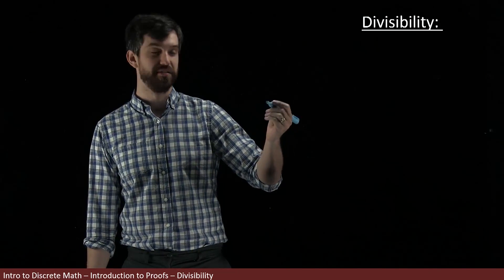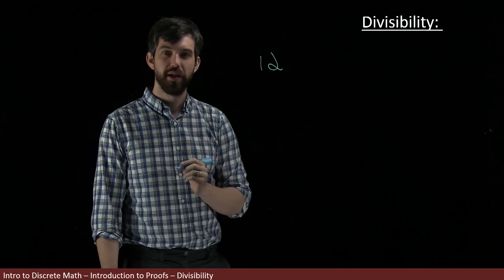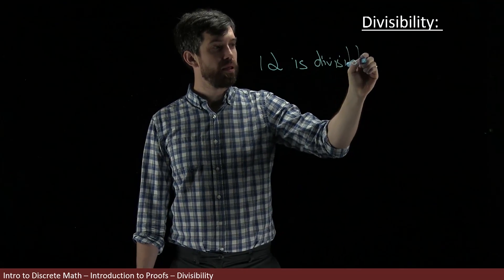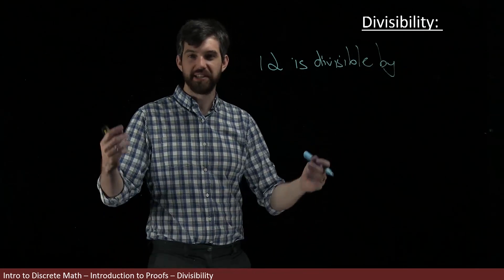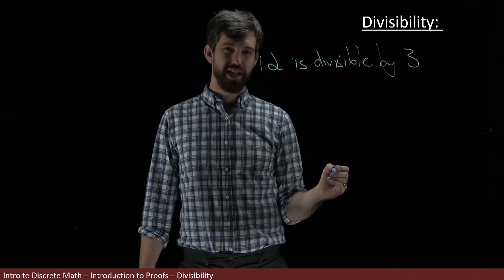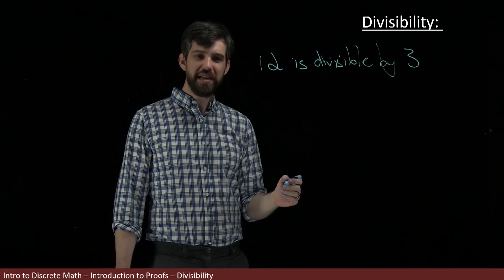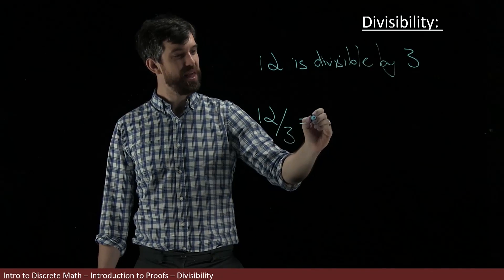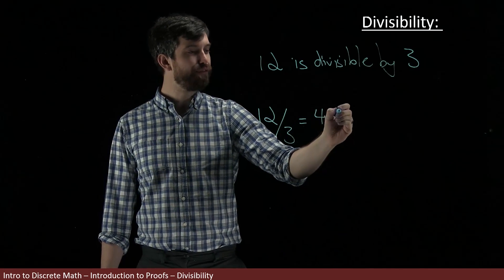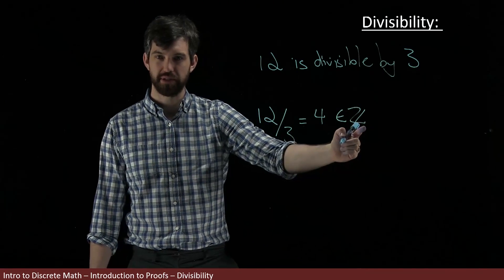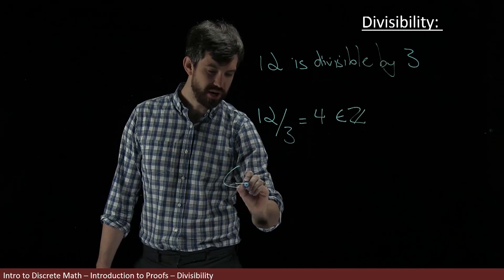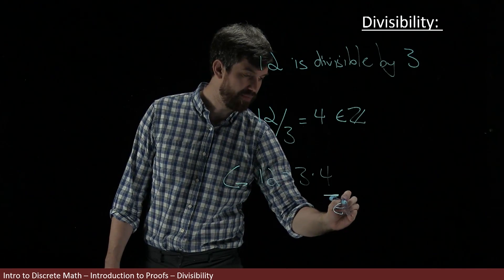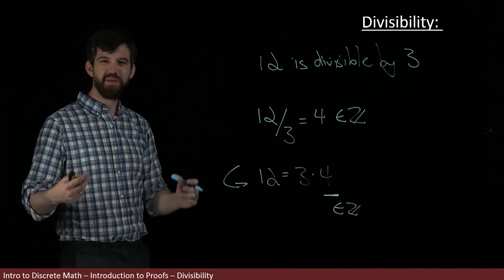Let me take a number with lots of factors — how about 12? We can say 12 is divisible by all kinds of things, like 3. What I mean is that if I take 12 and divide it by 3, I get 4, and that 4 is inside the integers. Or rearranged: 12 is equal to 3 multiplied by 4, where 4 is again an integer. That's what I mean by divisibility.